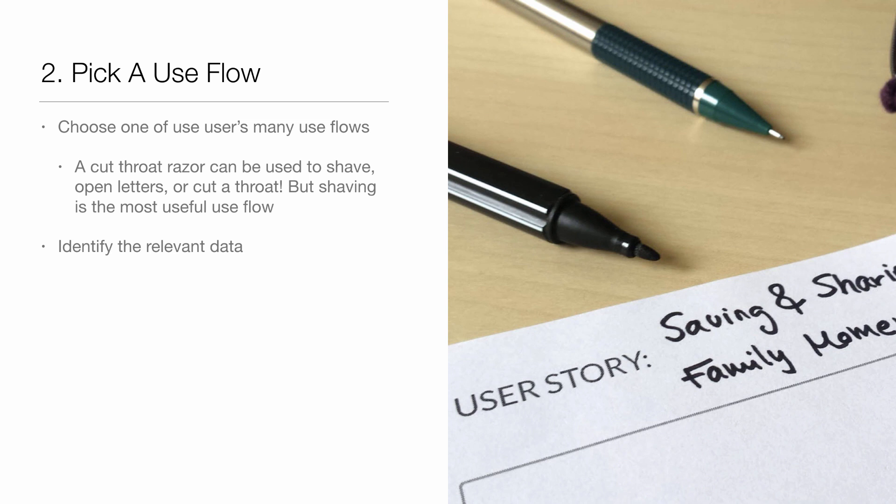Once you've got data, you need to pick a flow. A flow is one example of use. All products are going to have many uses — the example I've got here is a cutthroat razor: it can be used to shave, to open letters, or to cut a throat. But shaving is definitely the use we care about the most. So identify the most useful flow of your product and base your work around that. Then identify relevant data that supports that flow.